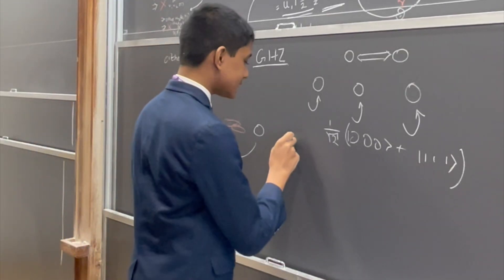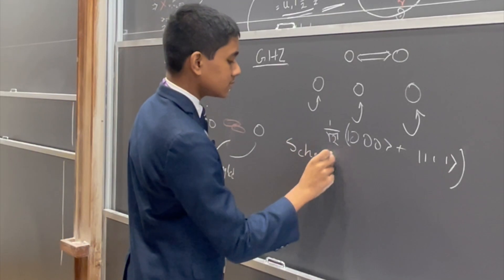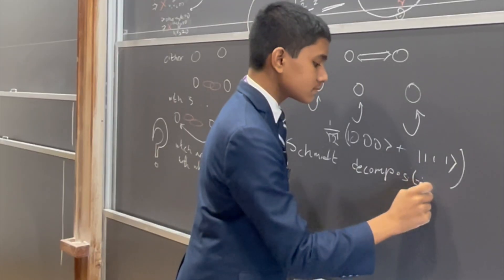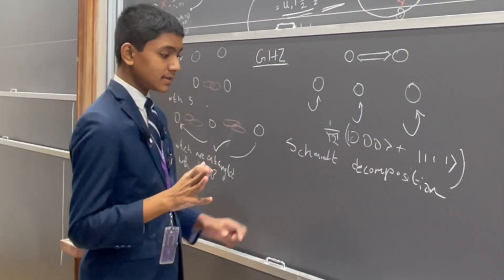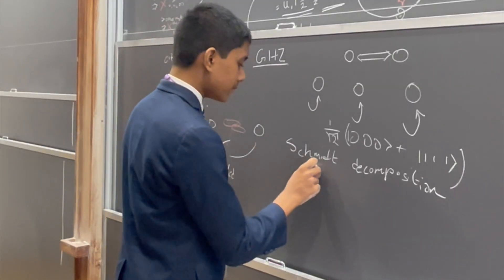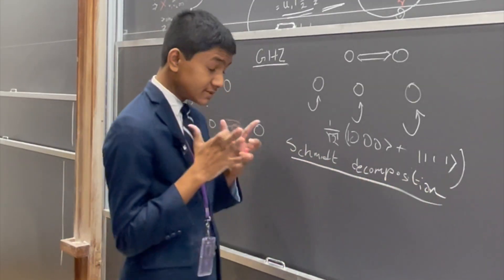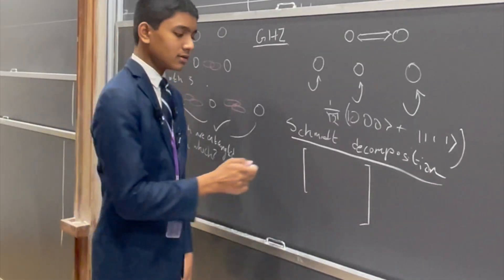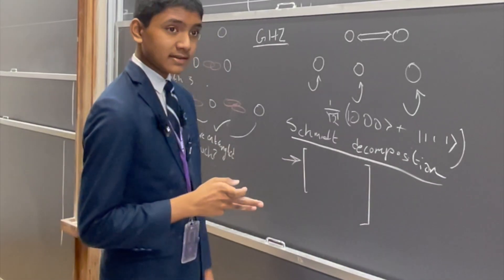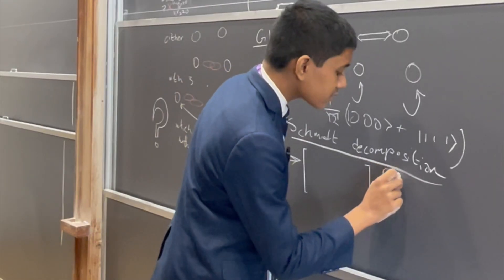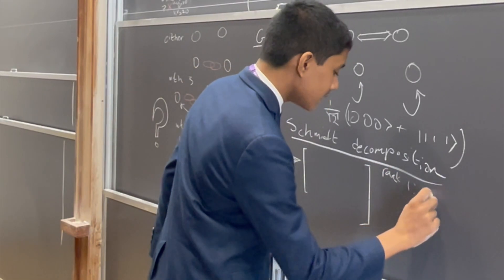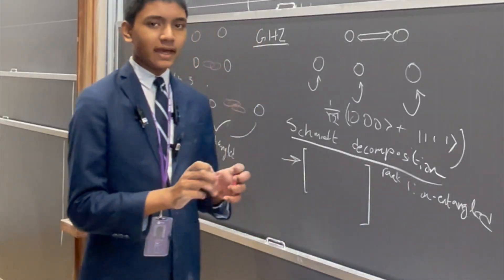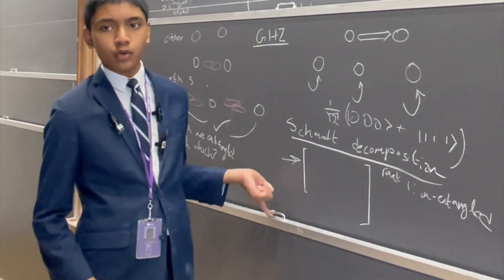This is where Schmidt decomposition comes in. Schmidt decomposition essentially treats the state as a matrix with some rank. If a particle is rank one, it's unentangled. If it has a higher rank, that essentially means different levels of entanglement — we could say it gets more and more entangled.